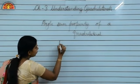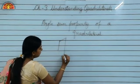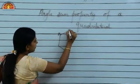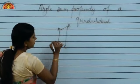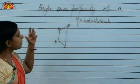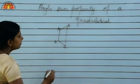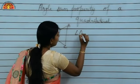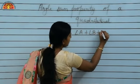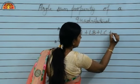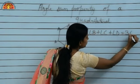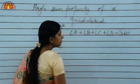Suppose we draw any quadrilateral and label it as A, B, C, D. In the case of the angle sum property of a quadrilateral, the sum of all 4 angles — angle A plus angle B plus angle C plus angle D — is equal to 360 degrees.